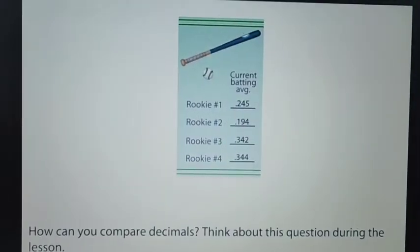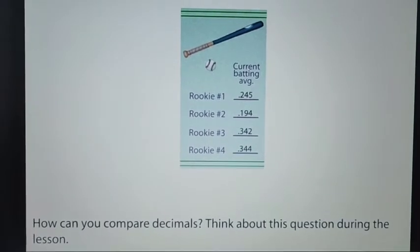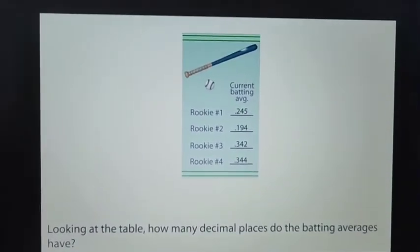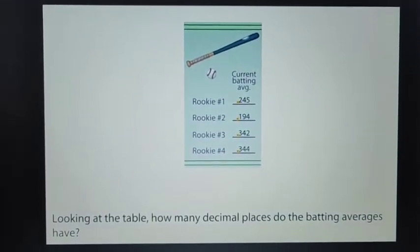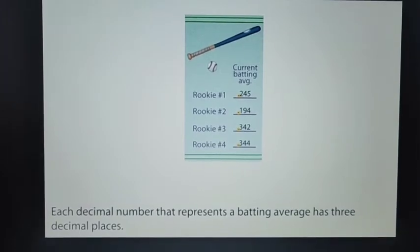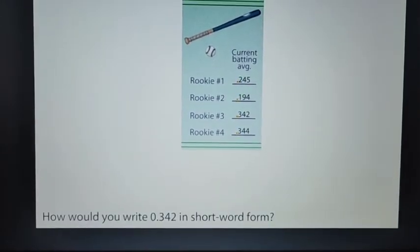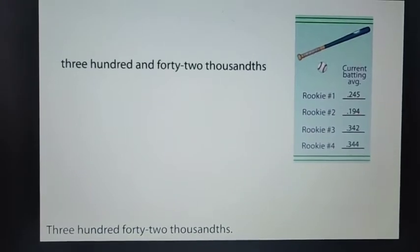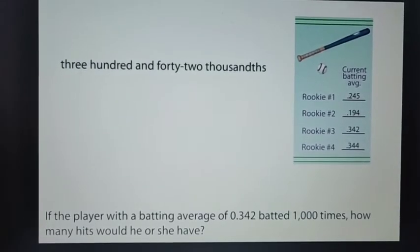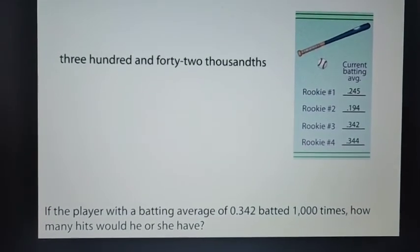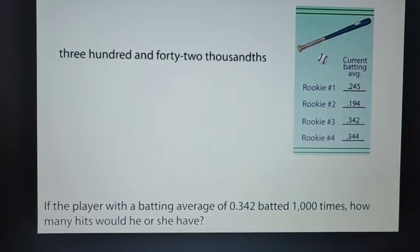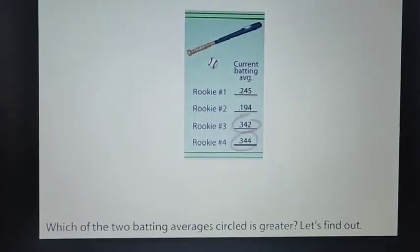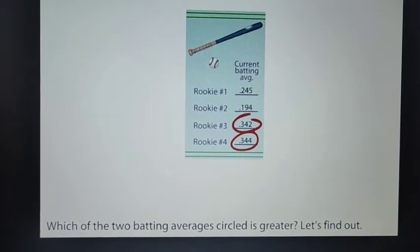How can you compare decimals? Think about this question during the lesson. Batting averages for a single season are shown for some baseball players. Looking at the table, how many decimal places do the batting averages have? Each decimal number that represents a batting average has three decimal places. How would you write 342,000 in short word form? If the player with the batting average of 342,000s batted 1,000 times, how many hits would he or she have? He or she would have 342,000? Which of the two batting averages circled is greater? Let's find out.